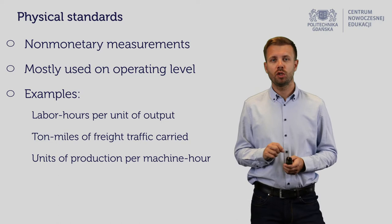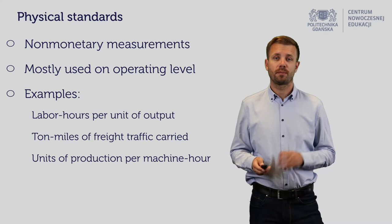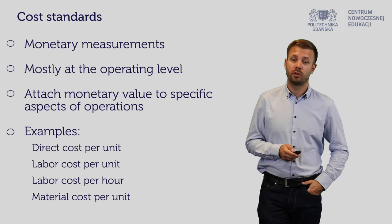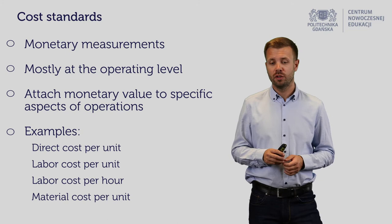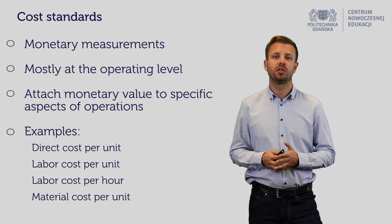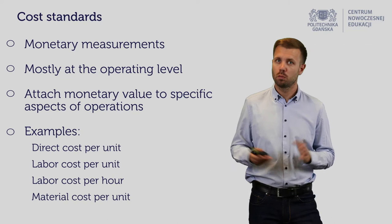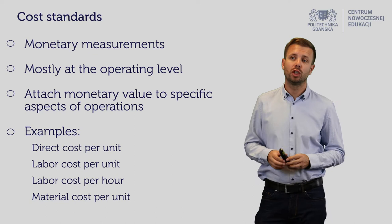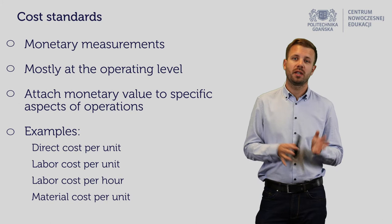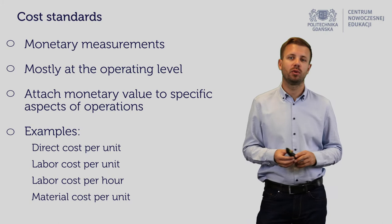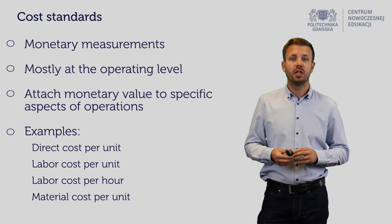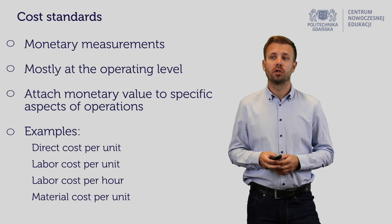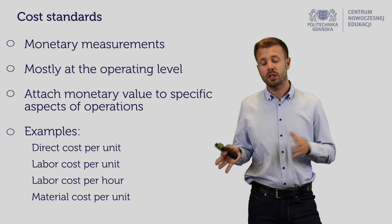Cost standards are monetary measurements. You attach monetary values to specific aspects of operations. For example, the direct cost of production of a new Alfa Romeo Giulia might be 25,000 euro, or for labor cost per unit — to produce a single new car requiring 150 working hours — the direct cost per unit might be 3,000 euro.